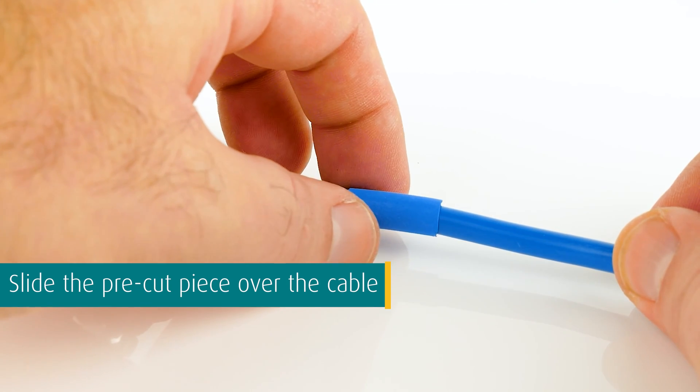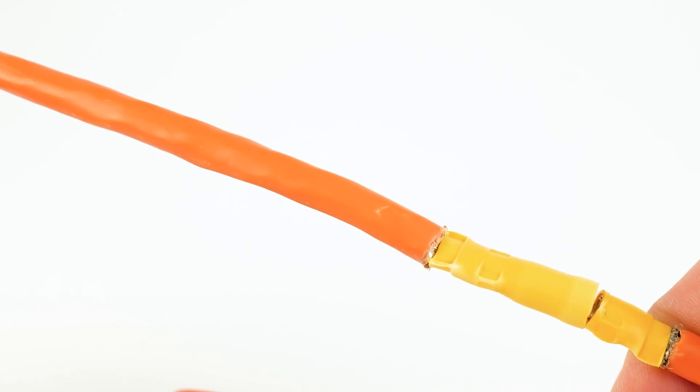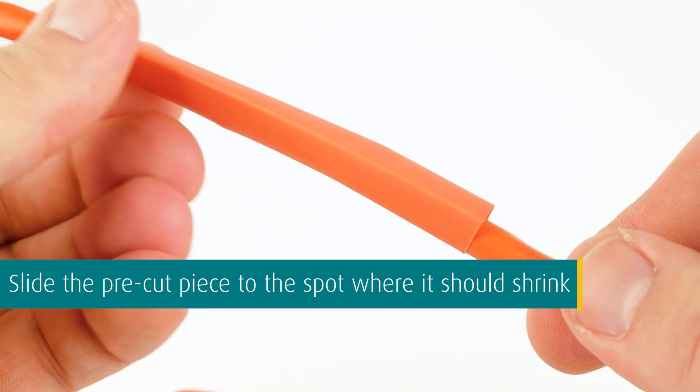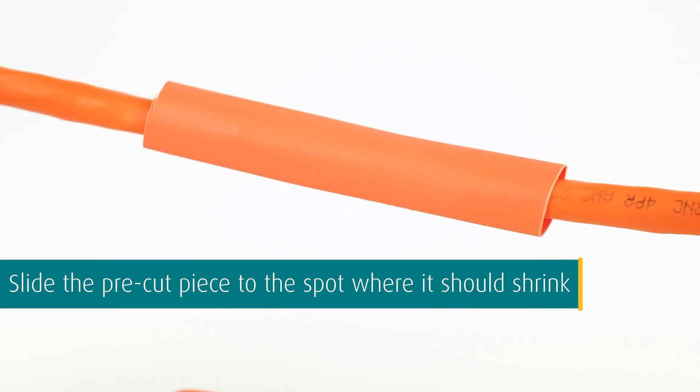Slide the pre-cut piece of heat shrink tubing over the cable. Repair and connect the cable. Slide the pre-cut piece of heat shrink tubing to the spot where it should shrink.